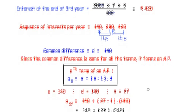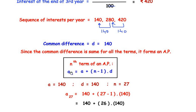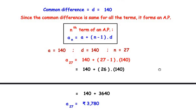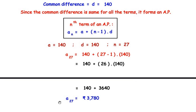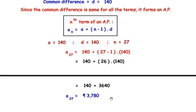Plugging in the values: a₂₇ = 140 + (27 − 1) × 140 = 140 + 26 × 140 = 140 + 3640 = rupees 3780. So the interest at the end of the 27th year is rupees 3780. This is our answer.